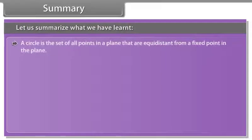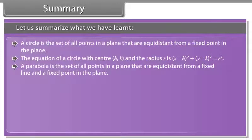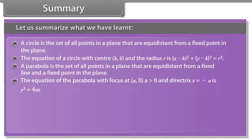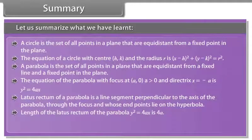Summary. A circle is the set of all points in a plane that are equidistant from a fixed point in the plane. The equation of a circle with center (h, k) and radius r is (x - h)² + (y - k)² = r². A parabola is the set of all points in a plane that are equidistant from a fixed line and a fixed point. The equation of the parabola with focus at (a, 0) where a > 0 and directrix x = -a is y² = 4ax. Latus rectum of a parabola is a line segment perpendicular to the axis through the focus, whose end points lie on the parabola. Length of latus rectum of y² = 4ax is 4a.